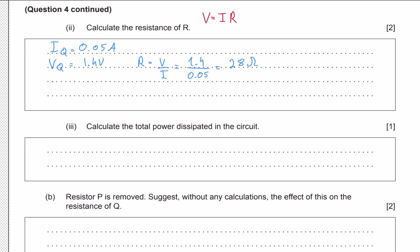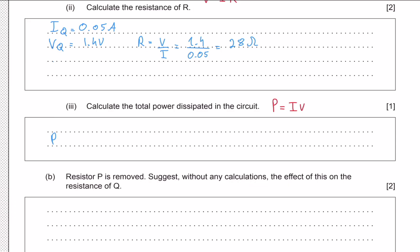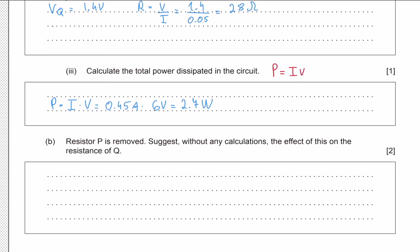Next, we need to calculate the total power dissipated in the circuit. We just apply P equals IV. The total current in the circuit is 0.45 amps and the EMF of the battery is 6 volts, so the total power is 0.45 times 6, which equals 2.7 watts.